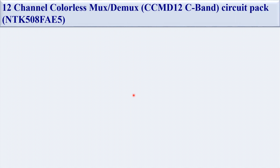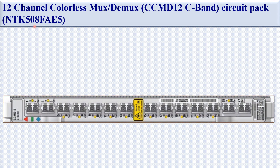Hello friends. In today's video we are going to discuss the CCMD 12 C-band circuit pack. CCMD 12 means 12-channel colorless merge demux, used for C-band. Its package code is NTK 508 FA E5. Here you can see the CCMD 12 C-band self view.